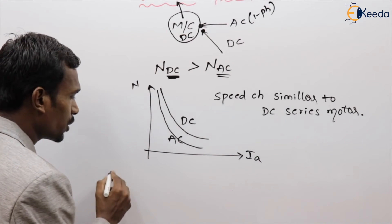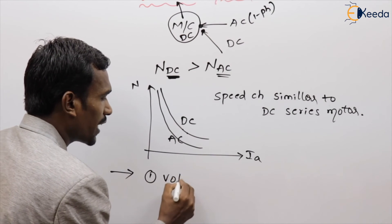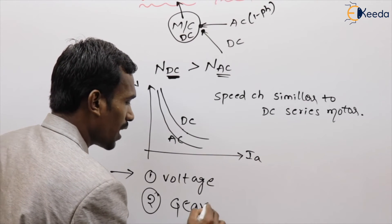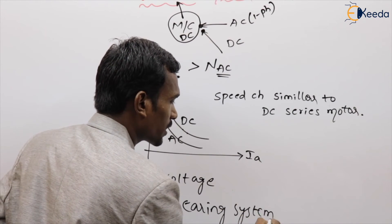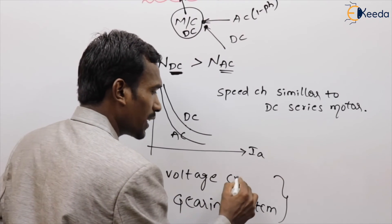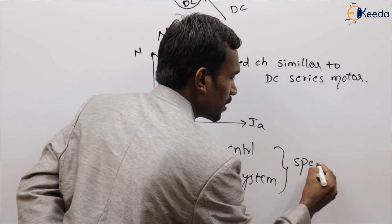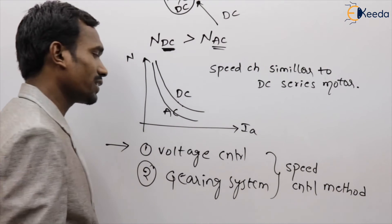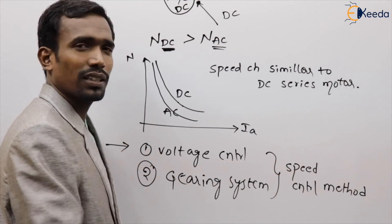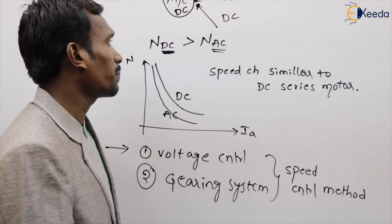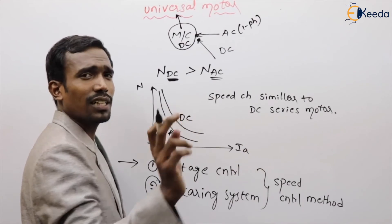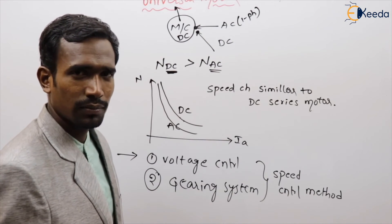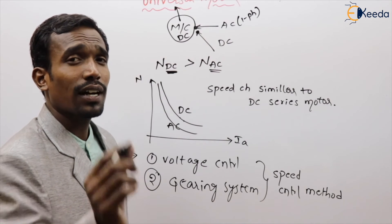The speed of the universal motor can be controlled by two methods: one is the voltage control method, and the second is the gearing system. These are the two speed control methods for the universal motor.